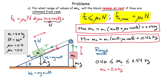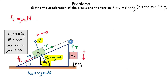My last problem: find the acceleration of the blocks and the tension when m2 = 5 kilograms. Since 5 kg exceeds the maximum value, the system is definitely moving — meaning we must use kinetic friction. The block m1 moves up the ramp, so the kinetic friction force acts down the ramp. This is now Newton's second law — the right-hand side equals mass times acceleration, not zero.